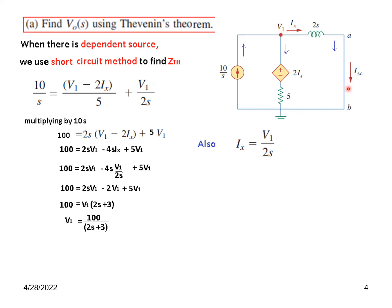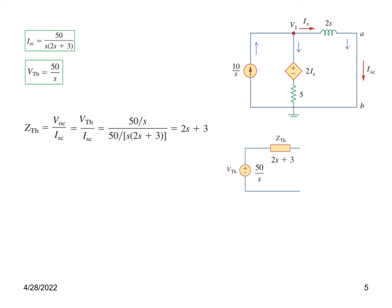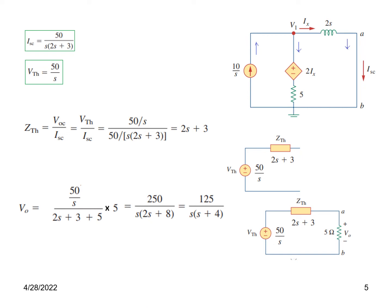With V1 known, I_sc equals V1 divided by 2s. V_Th (V7n) is calculated and Z_Th (Z7n) equals 2s + 3. We then draw the Thevenin equivalent circuit, separate the load, and easily calculate V0 by voltage division: total voltage divided by total impedance, multiplied by the load impedance. This gives us V_out, the answer to the first part.